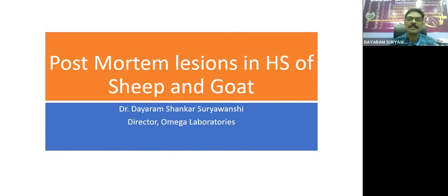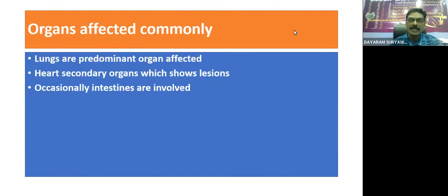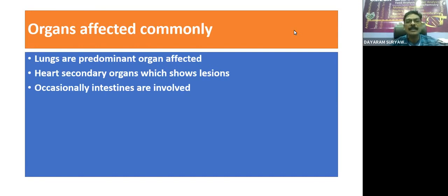Post-mortem lesions in hemorrhagic septicemia (HS) in sheep and goat only. HS is caused by a bipolar organism. It is transmitted through air, water, feed, and fomites. In case of HS, the organ predominantly affected is the lung, followed by heart. The toxins circulated in the bloodstream lead to damage to the vascular endothelial cells and changes in different vascular endothelial cells of other parts of the body.